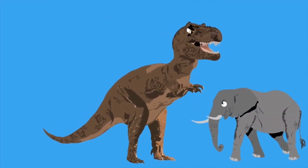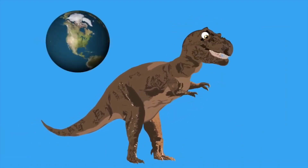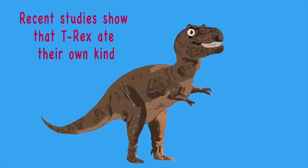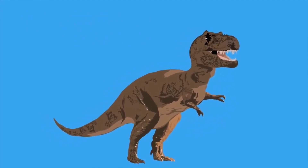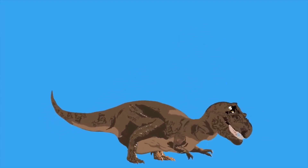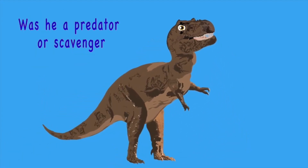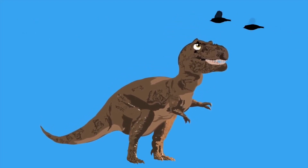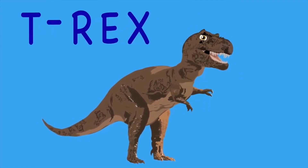T-Rex weighed around 5–7 tons — as heavy as an elephant. It was 40 feet in length and 20 feet tall, longer than a school bus. North America is where the T-Rex once called its home. Recent studies show T-Rex ate their own kind, and despite what movies tell you, their eyesight worked fine. T-Rex possibly used its 3-foot arms to push itself off the floor, has some of the largest teeth of any dinosaur, and paleontologists say the T-Rex had no roar. Birds are the closest relative to the late dinosaur.